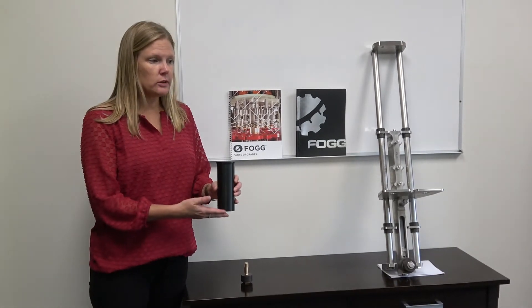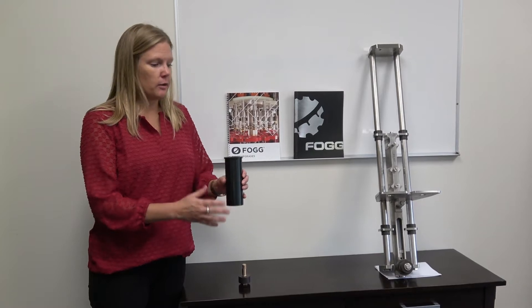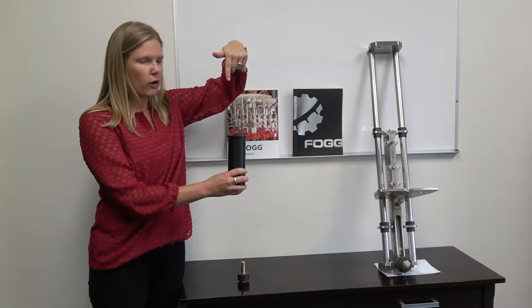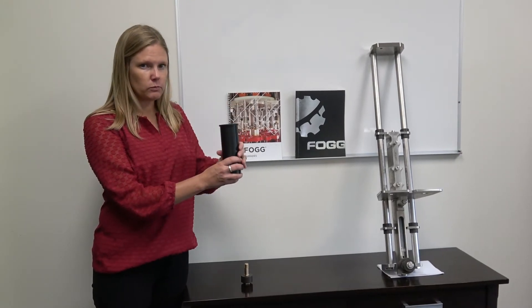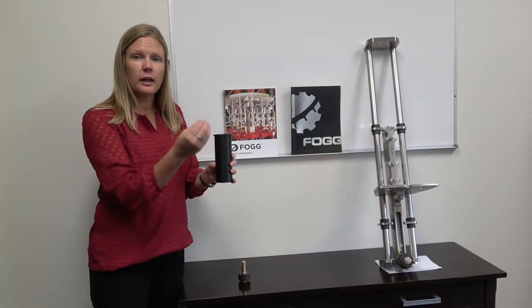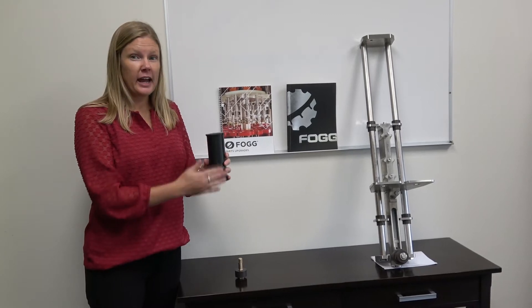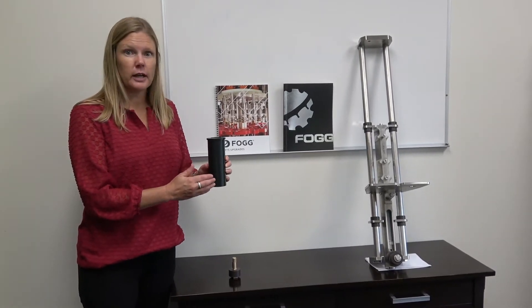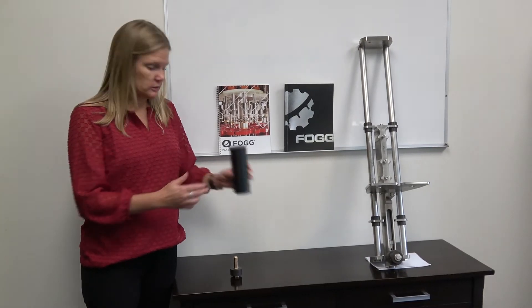So if you start seeing your bottles misaligning a little, if the valve is supposed to go directly into the bottle and it's off by just a little bit, or if it's spitting or sputtering that liquid out, that is when you're going to start to notice that maybe it's time to look at replacing these wearable lifter bushings.